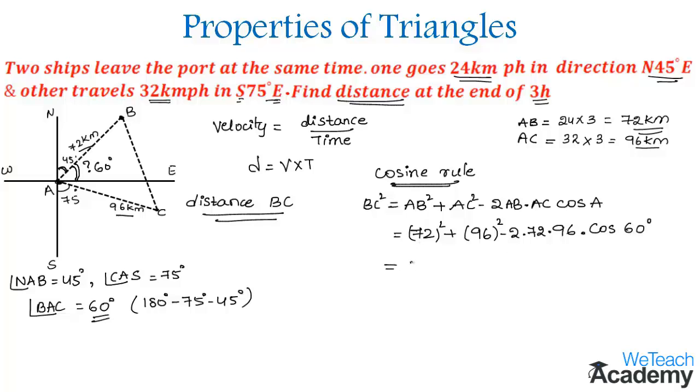Which is 5184 plus 9216 minus 2 into 72 into 96, which is 13,824, into the value of cos 60 which is 1 by 2.